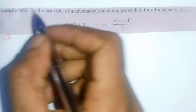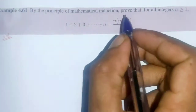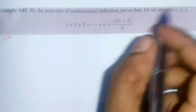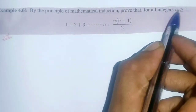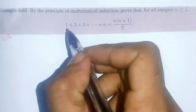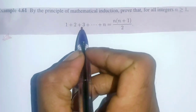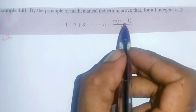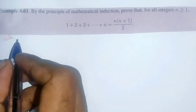Example 4.61: By principle of mathematical induction, prove that for all integers n greater than or equal to 1, 1+2+3+...+n is equal to n(n+1)/2.